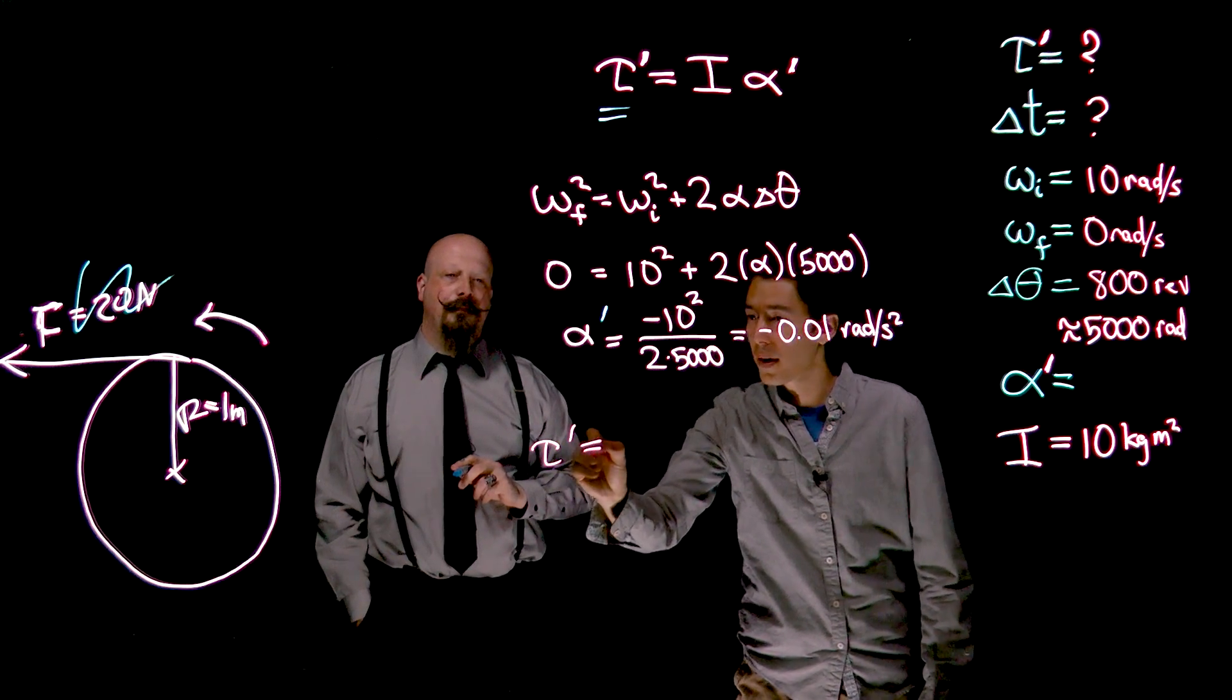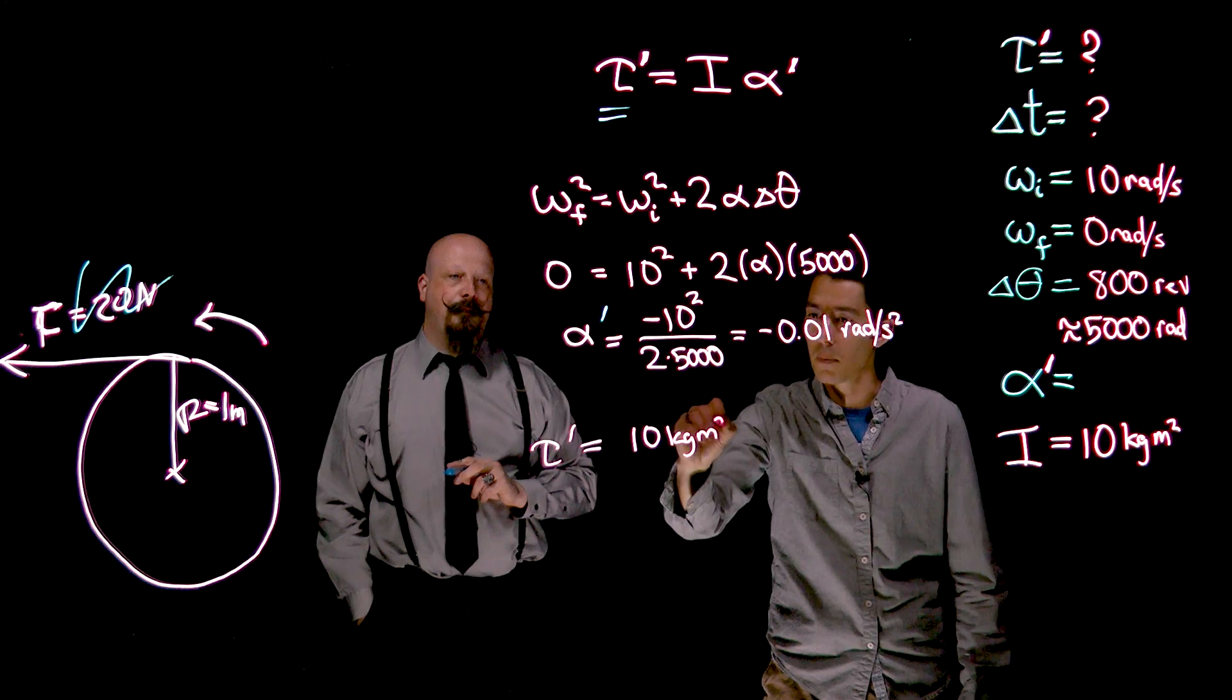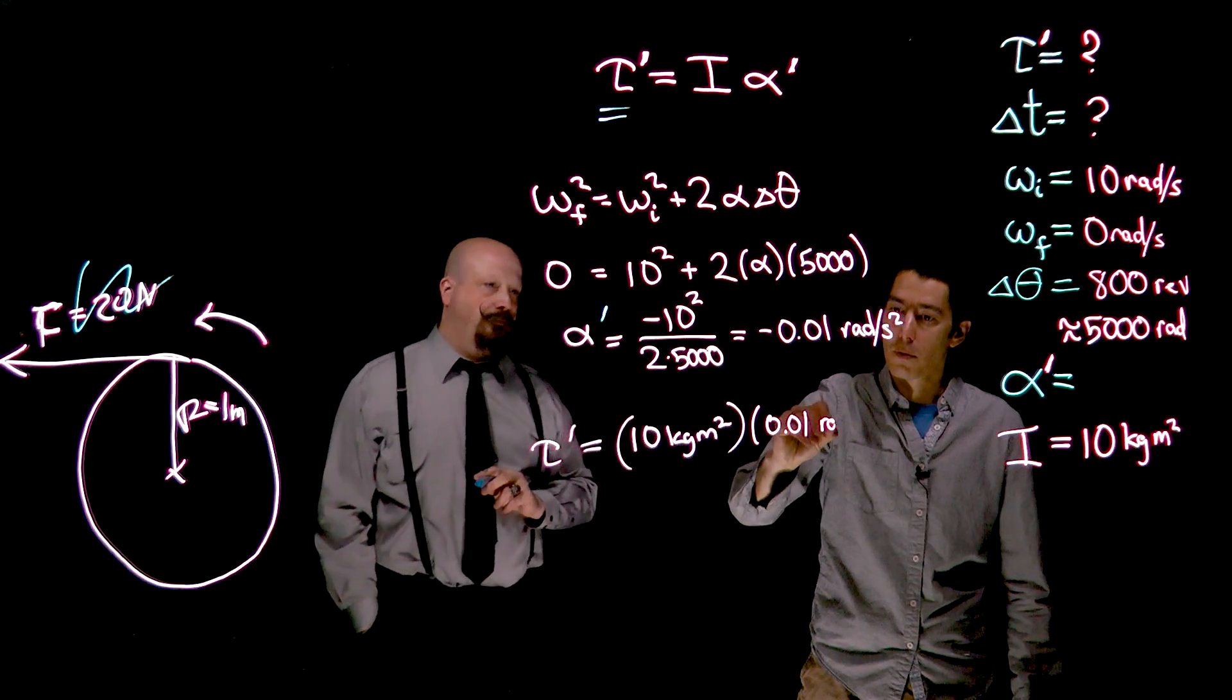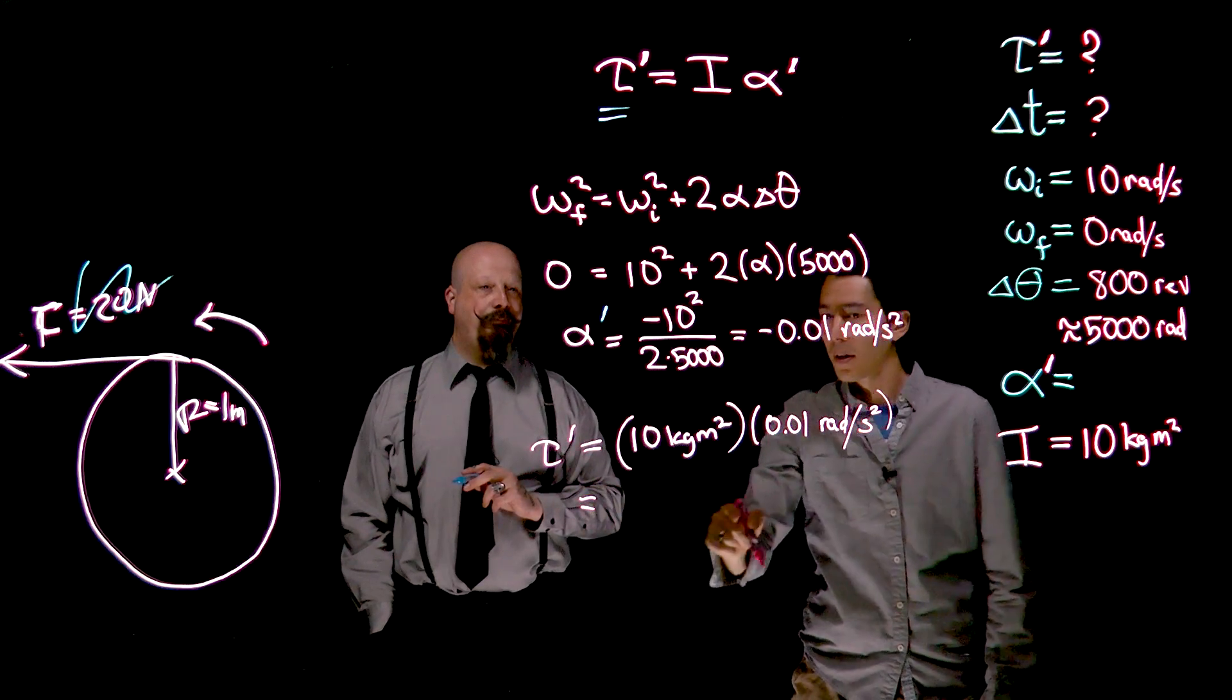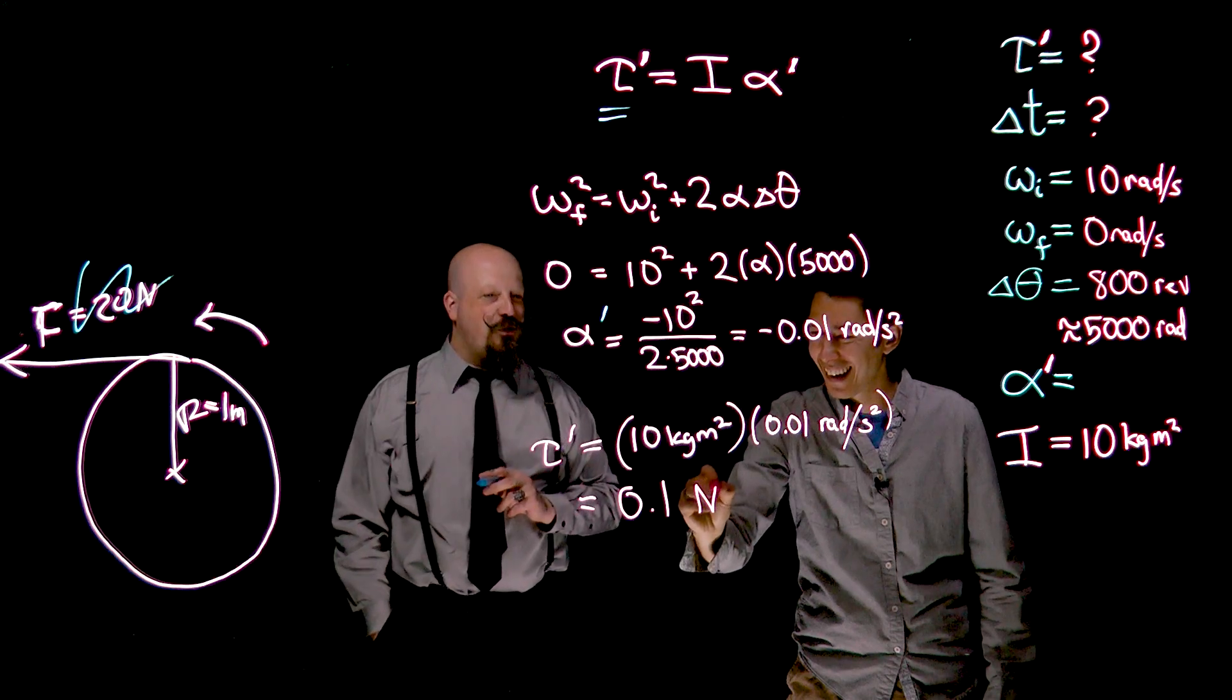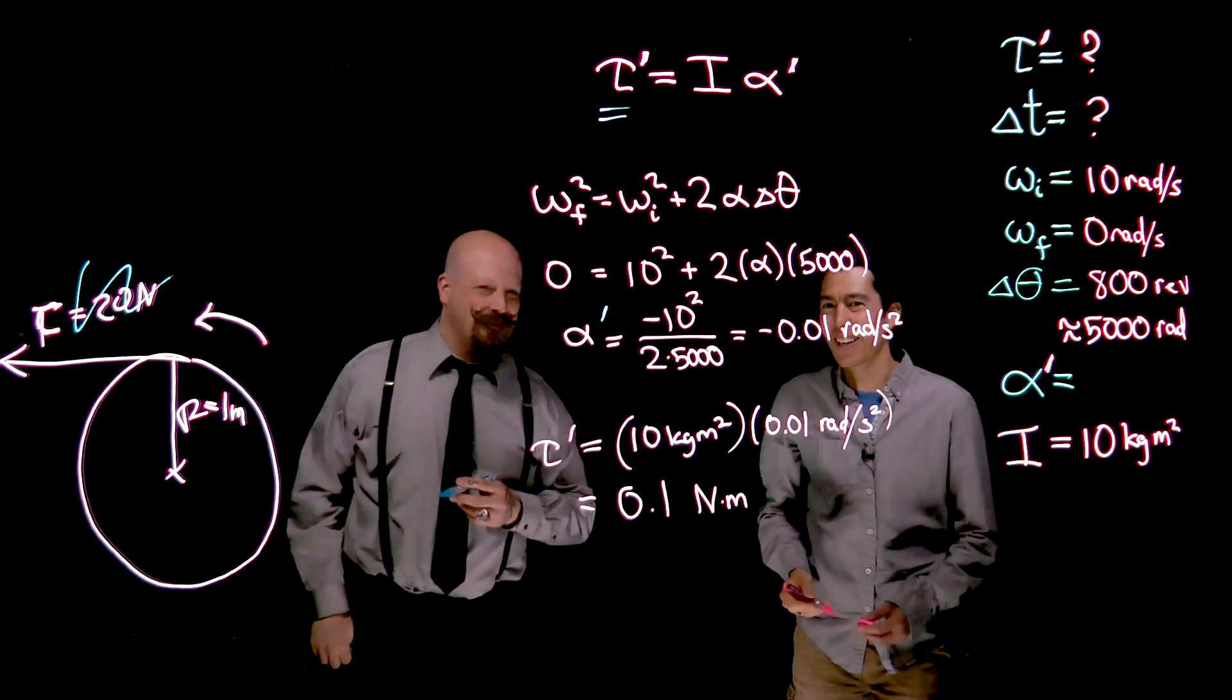Okay. The new torque is 10 kilogram meter squared, our moment of inertia, times 0.01 rads per second squared. And we're going to get a torque that is 0.1 kilogram meters squared radians per second squared, or Newton meters.